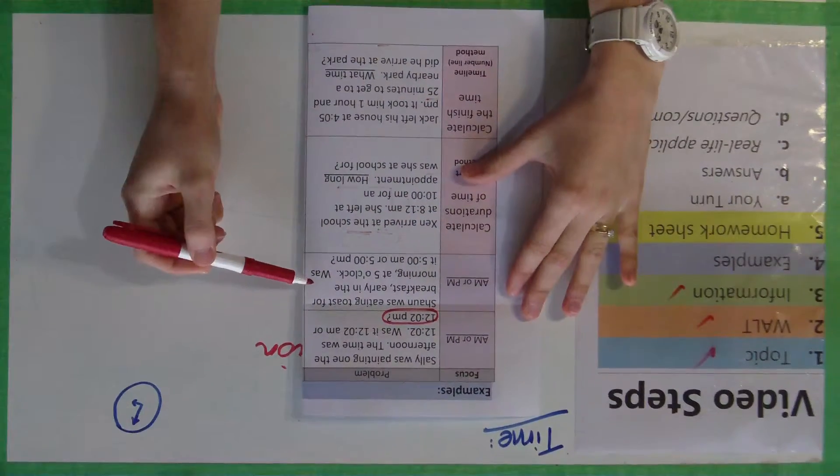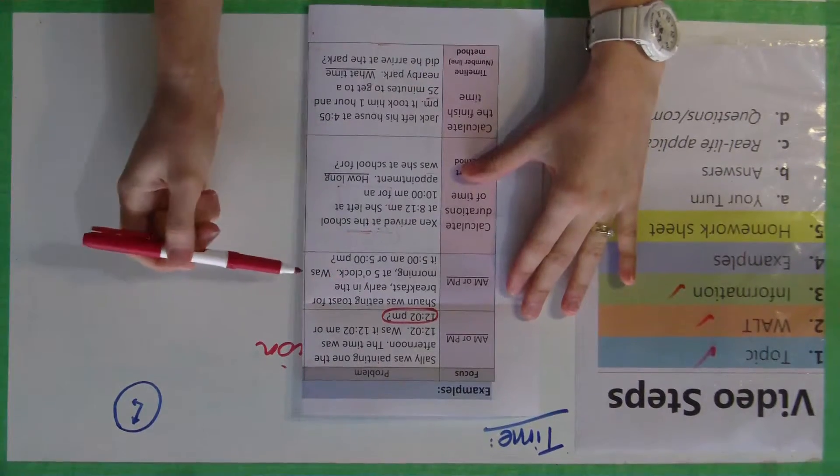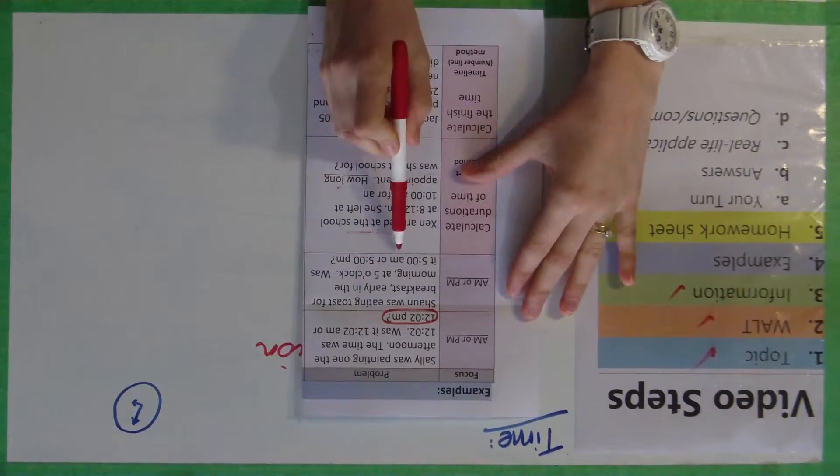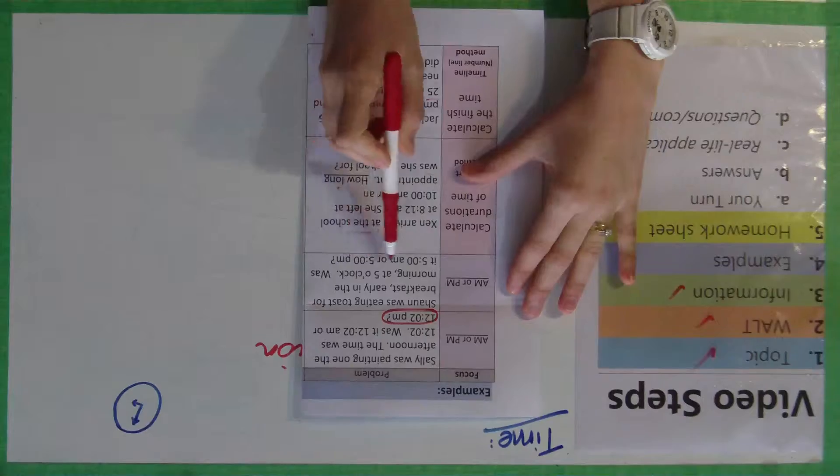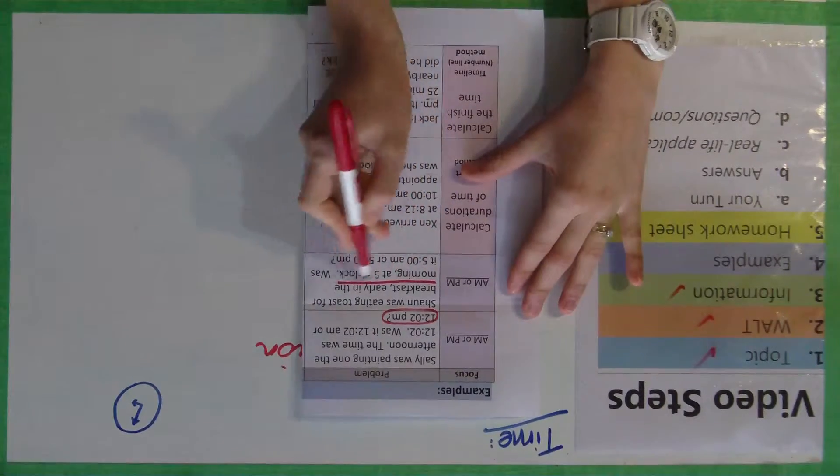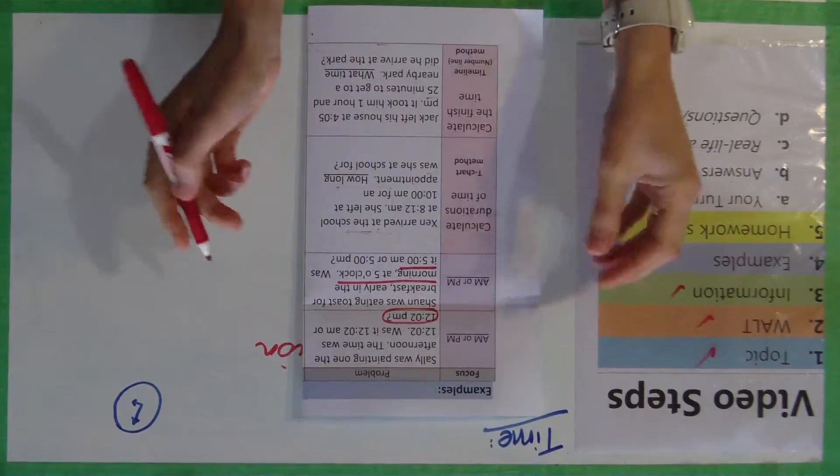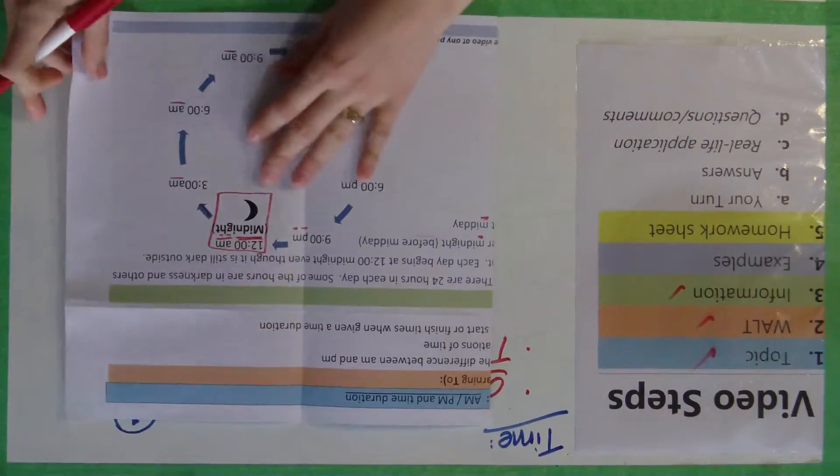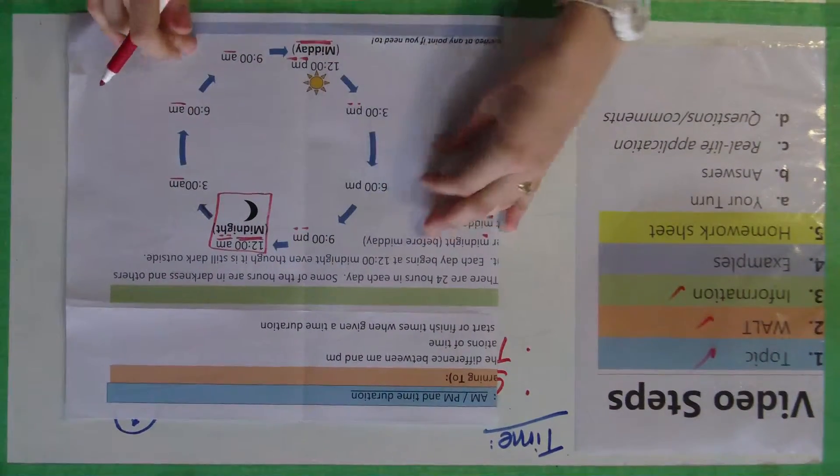Sean was eating toast for breakfast early in the morning at 5 o'clock. Was it 5 a.m. or 5 p.m.? So if it's early in the morning, and it was for breakfast time, we look over at our little map, our little cycle here, the times.